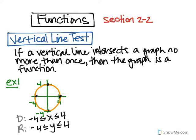Now, whether it's a function or not — that's what we have to determine. We've got to draw a vertical line. Remember, vertical lines look like this. If that vertical line intersects the graph more than once, then it's not a function. So we would say not a function, since it intersects the graph twice.